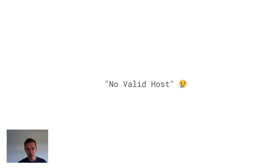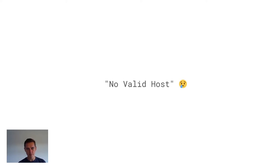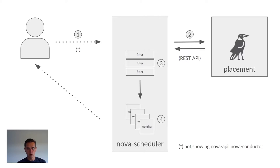My focus here is on the conditions that might cause the very famous 'no valid host' error that anyone who has ever operated an OpenStack cloud will surely have seen all too many times. That 'no valid host' error is raised by the scheduler, so it probably makes sense to start from there and analyze things from that perspective.